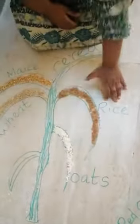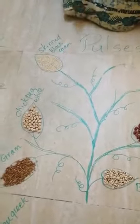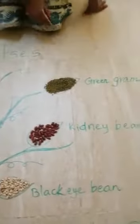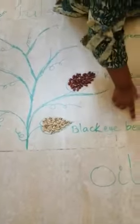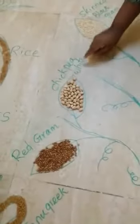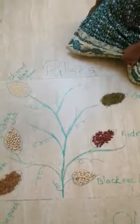Moving to pulses. Pulses are climbers. Now let us see some examples of pulses. Skinned black gram, green gram, kidney beans, black-eyed beans, chickpea white, and red gram. These are examples of pulses.